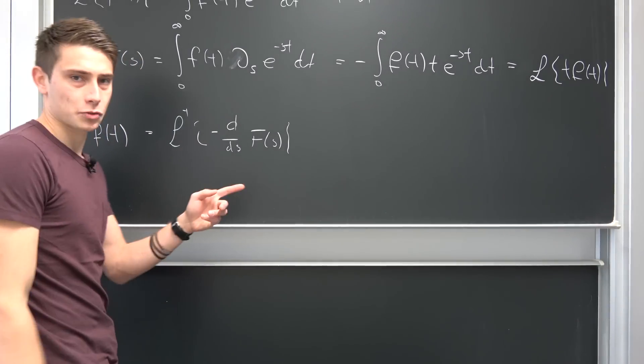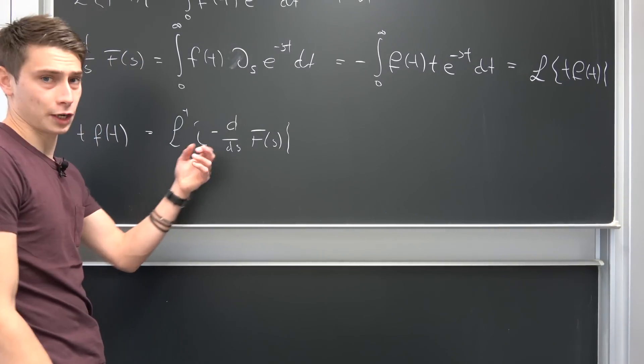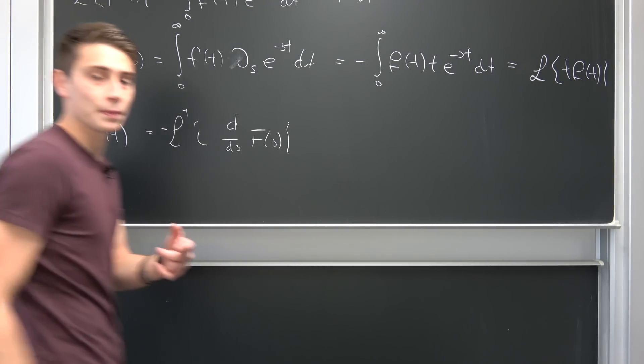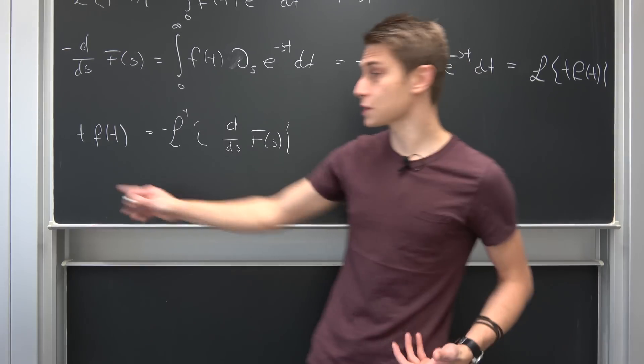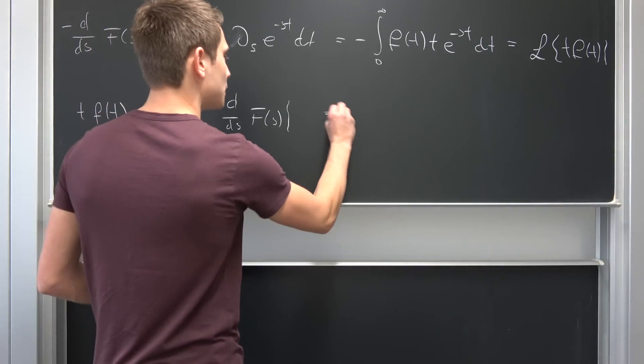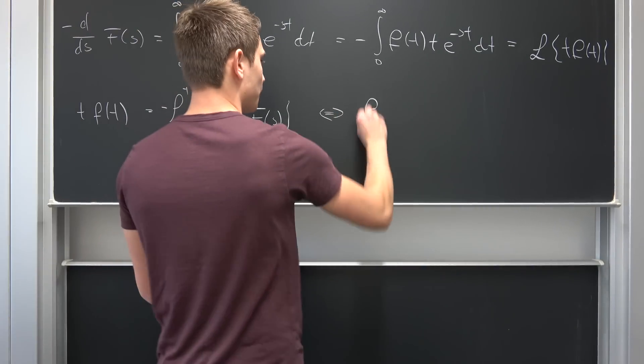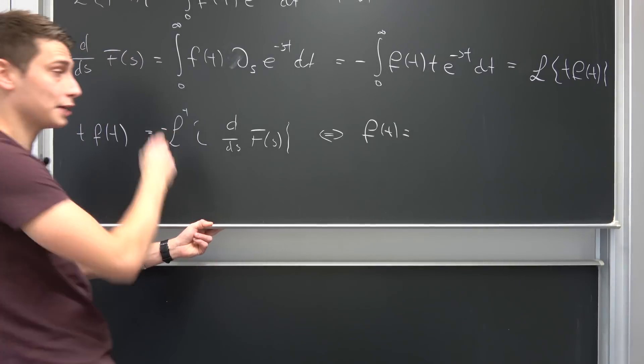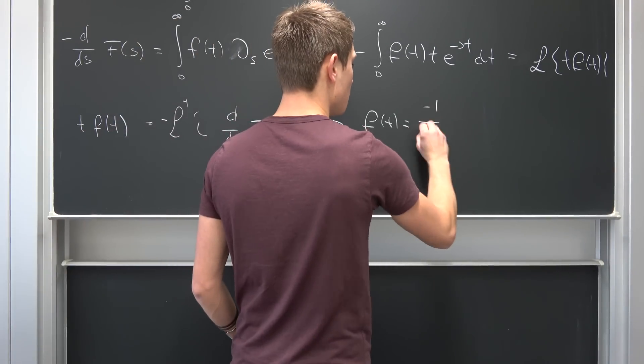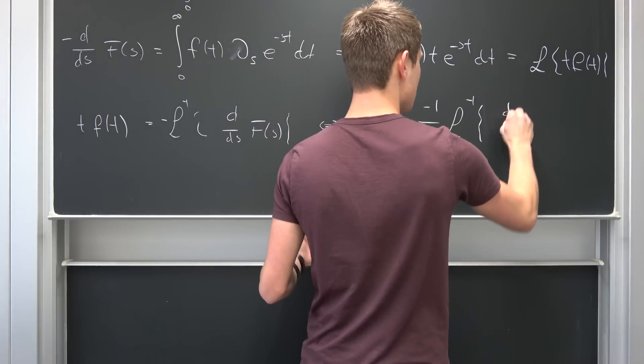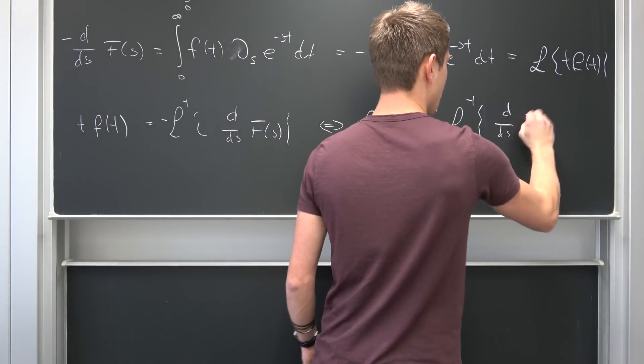The inverse Laplace transform is linear. It is defined with respect to an integral. So we can bring this negative sign to the outside. Now divide both sides by t (it's not going to equal 0; we don't want time of 0). That's equivalent to saying we have an expression for f(t) with respect to the inverse Laplace transform: -1/t times the inverse Laplace transform of d/ds F(s).